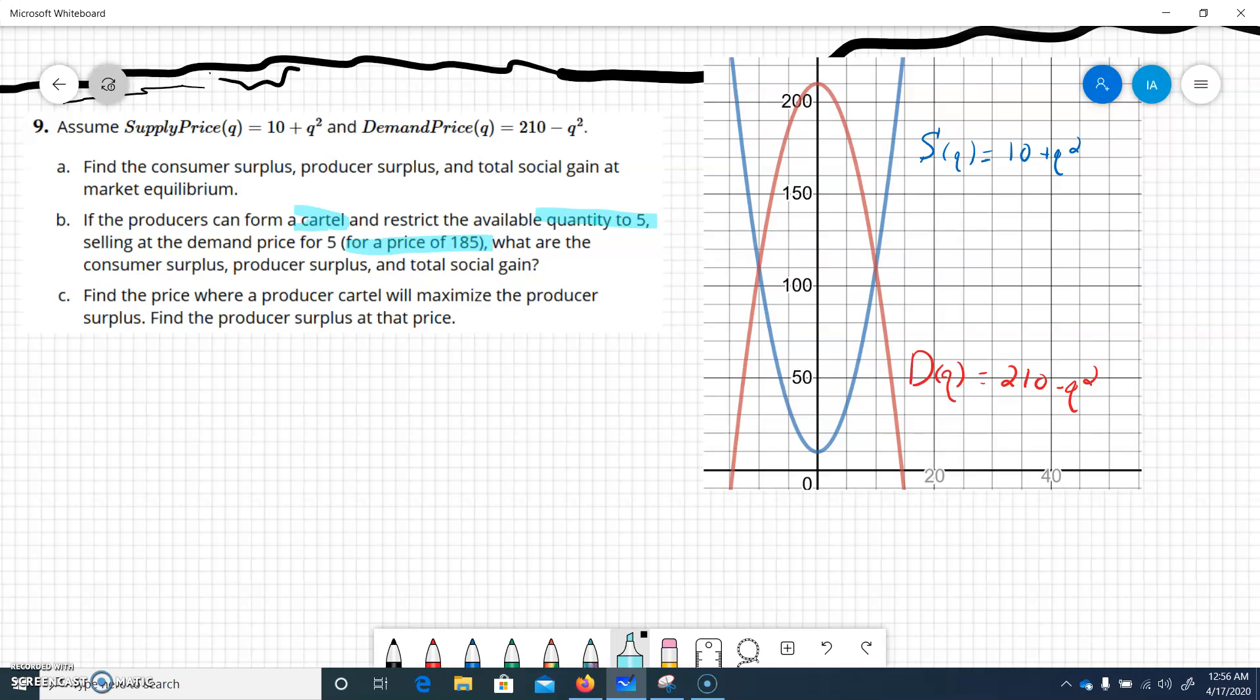We're supposed to calculate the consumer surplus, producer surplus, and total social gain. So let's see if we can look at what we've got here. If we look at our graph, we're setting the quantity at 5 and the price at 185, about here.